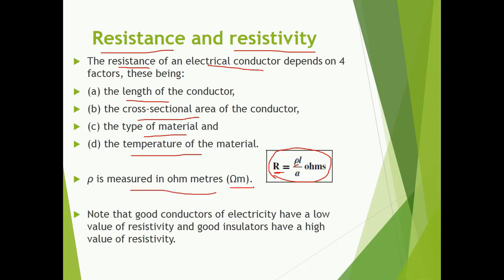Resistance is directly proportional to the length and is inversely proportional to area. Also, the resistivity will remain the same for a given conductor. For all the good conductors of electricity, the value of resistivity will be low, meaning resistance is low and opposition to the flow of current is low.